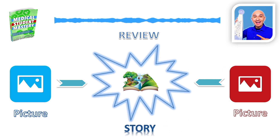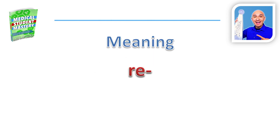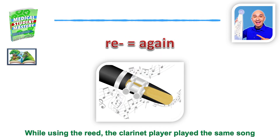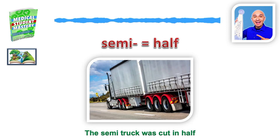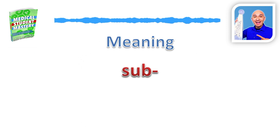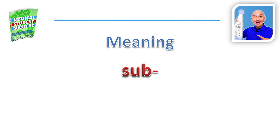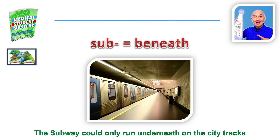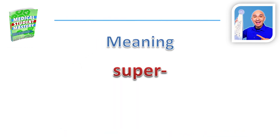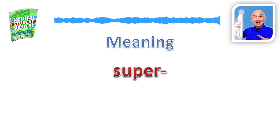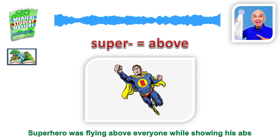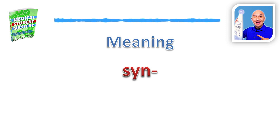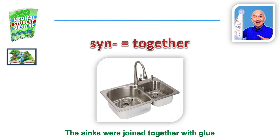Quick review — remember to review these stories for them to stick to your long-term memory. Re means again — picture the reed and the clarinet player playing the same song over and over. Semi means half — remember the truck cut in half. Sub means beneath — picture the submarine or the subway, both going beneath. Super means above — the superhero showing his abs above. And syn means together — picture the sinks joined together.